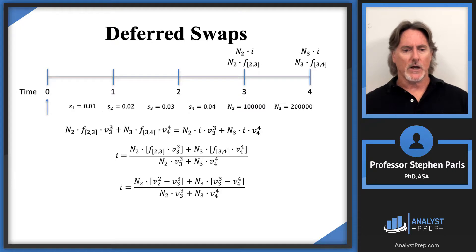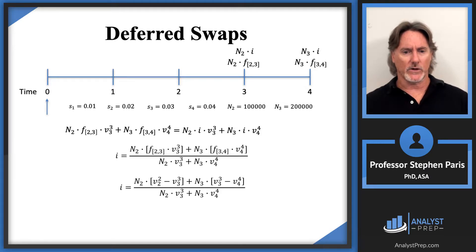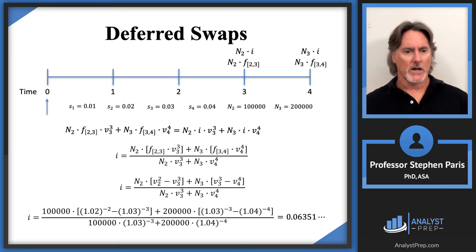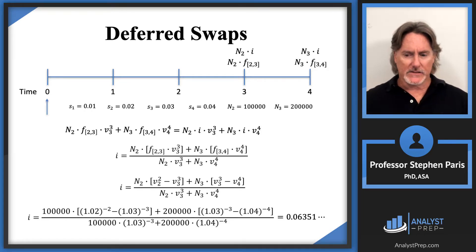Now I plug in numeric values for everything: notional amounts of 100,000 and 200,000 respectively, and the v-values based on the corresponding spot rates. Going through the calculation — which is tedious but straightforward — gives a swap rate of approximately 6.351%.